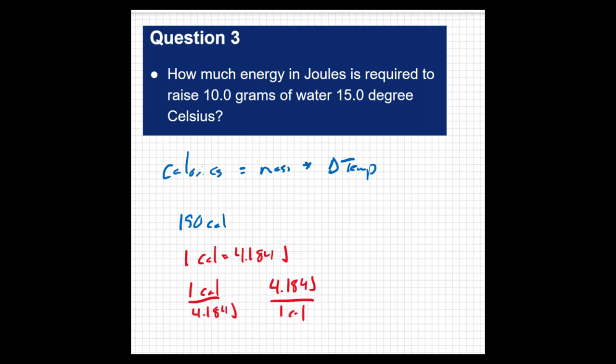So I can take my 150 calories up here and multiply it by one of these conversion factors. I want to end up with joules, so I'm going to take this one right here and bring this up here. And so I can say if I take my 150 calories multiplied by 4.184 joules for every one calorie, then that is going to equal 627.6 joules.